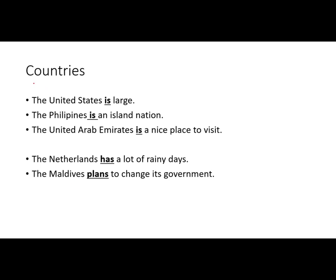First, we'll look at countries. Some countries end in S, but they're singular. For example, the United States — it has the S, so you think it's plural, but the United States is treated like 'it' or singular, so the verb would be 'is,' the singular form of the verb.